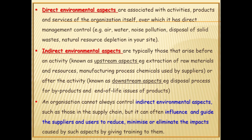Now let's see what are the direct and indirect aspects. Direct aspects are associated with activities like processes, products and services of the organization over which the management has direct control — i.e., air, water, noise pollution, generation and disposal of solid waste, depletion of natural resources. Direct environment aspects are typically those that arise before an activity, known as upstream aspects (e.g., extraction of raw materials and resources), or after the activity, known as downstream aspects (e.g., disposal processes for byproducts and end-of-life issues of products). An organization cannot always control indirect environment aspects such as those in the supply chain, but it can often influence and guide the suppliers and educate them how to reduce, minimize, or eliminate the impacts caused by such aspects.